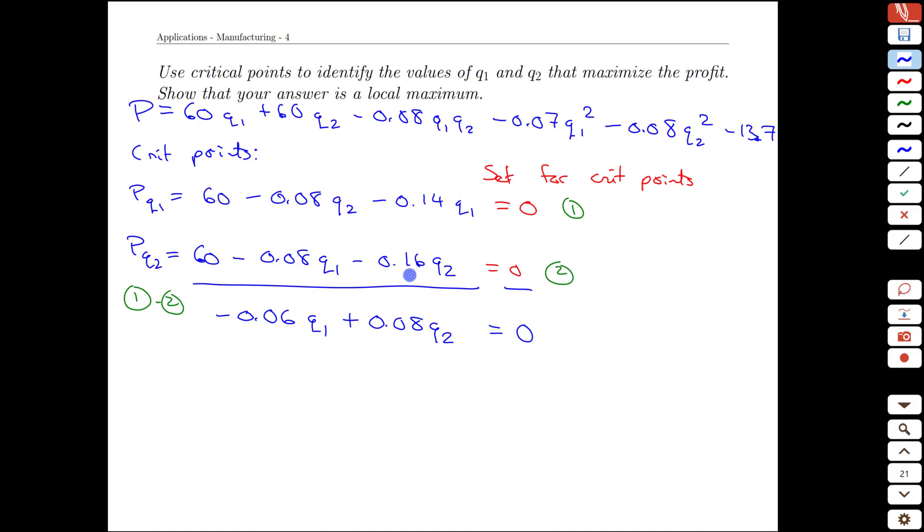Just double checking, 0.08 plus 0.16 would be 0.08. The q1 terms, negative 14 plus 8 is negative 6. And what that gives us is a nice ratio between the two quantities we want to produce. We can solve for, say, q2 here. We'll have 0.08 q2s is the same as 0.06 q1. And so q2 is going to be 0.06 over 0.08 q1. And that is much better known as three quarters.